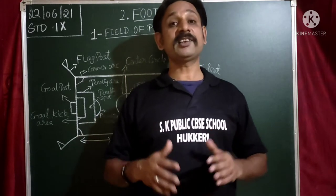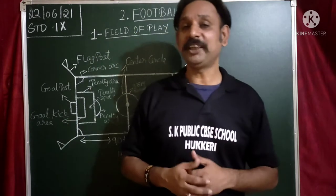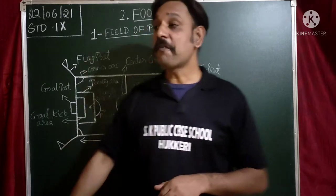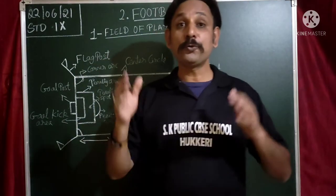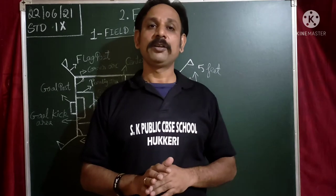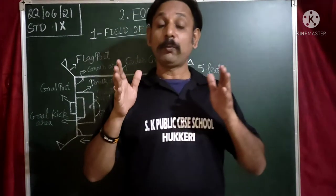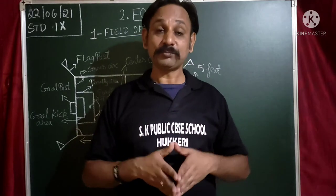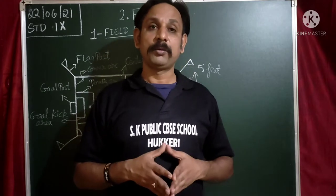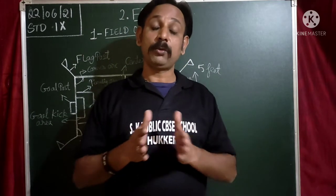Rule number one is the Field of Play. When you are playing football, you should know all the rules. The first rule covers the ground — the field of play. You should know the measurement, the different parts, the shape and size, the dimensions, and other things in the field. So let us see how the football ground looks like.